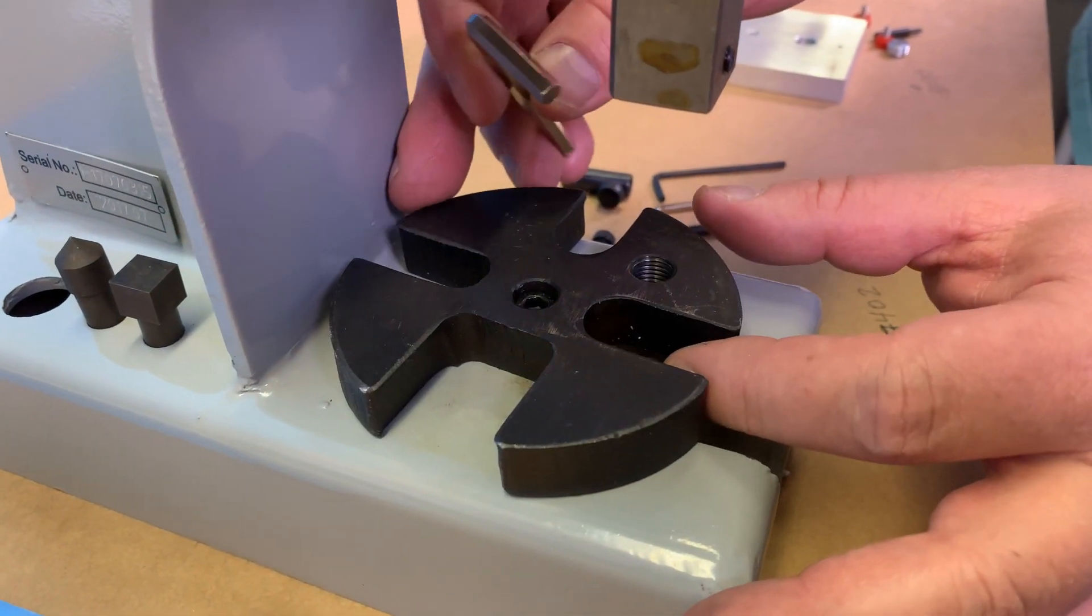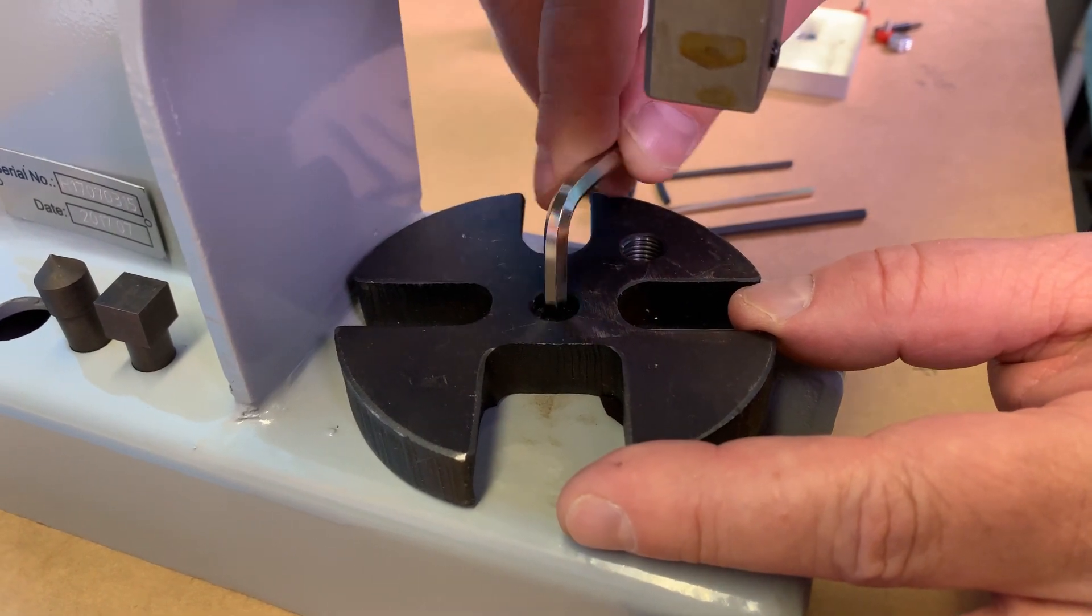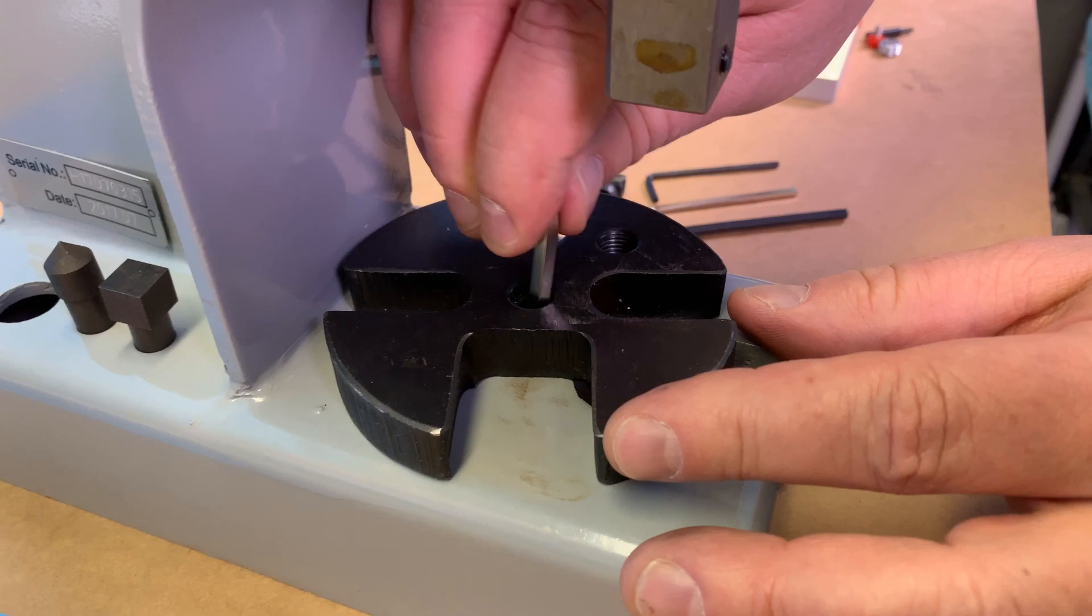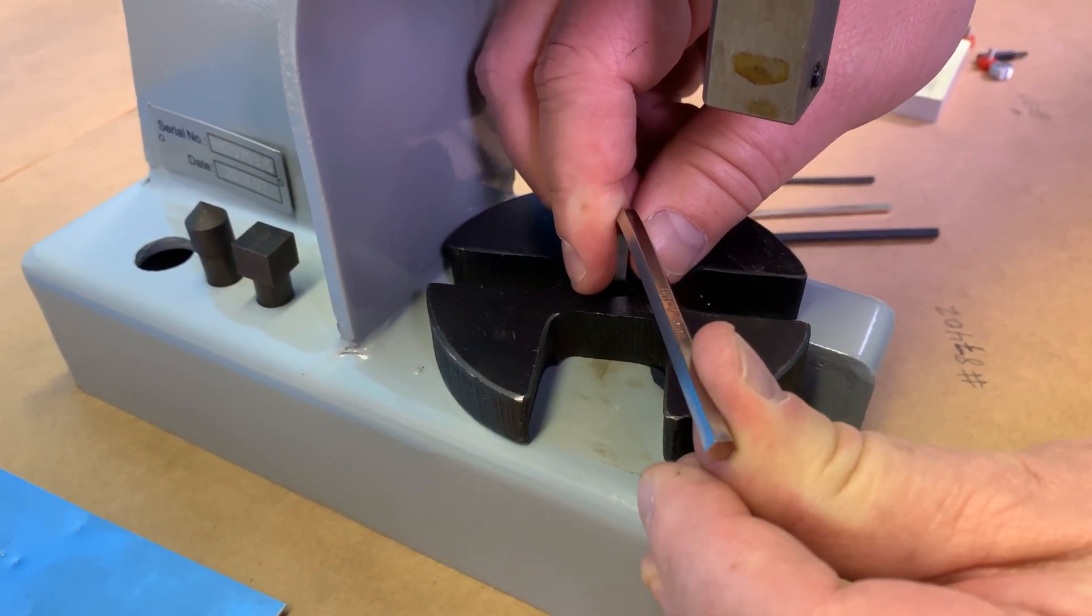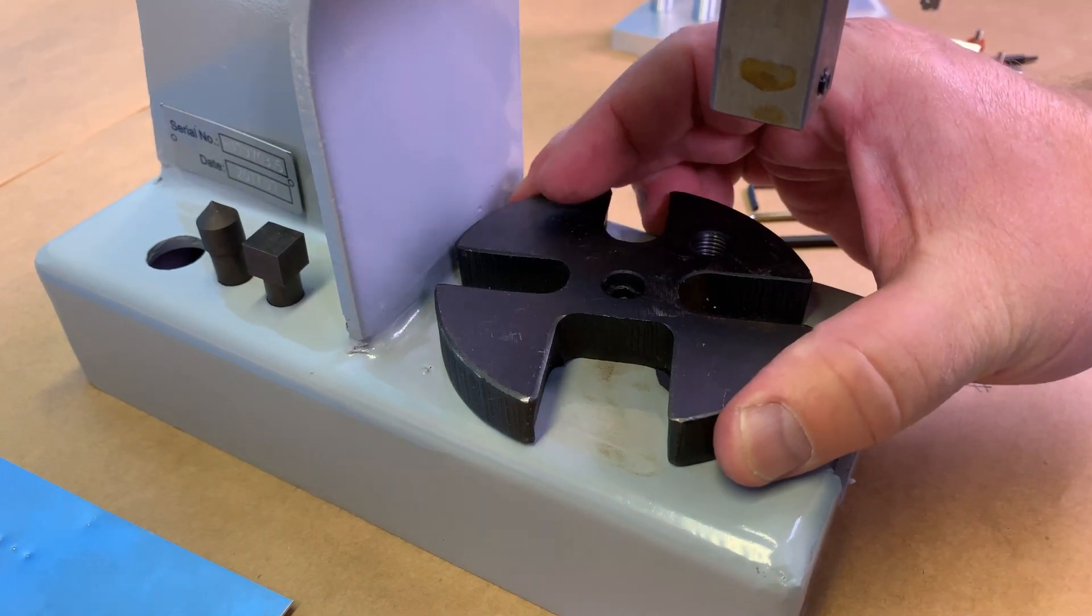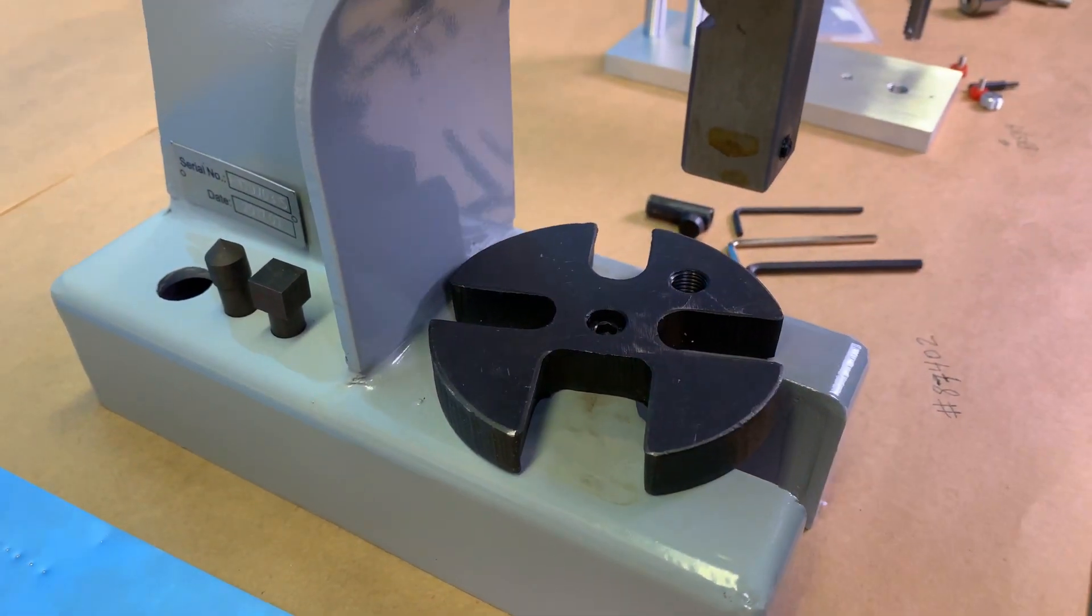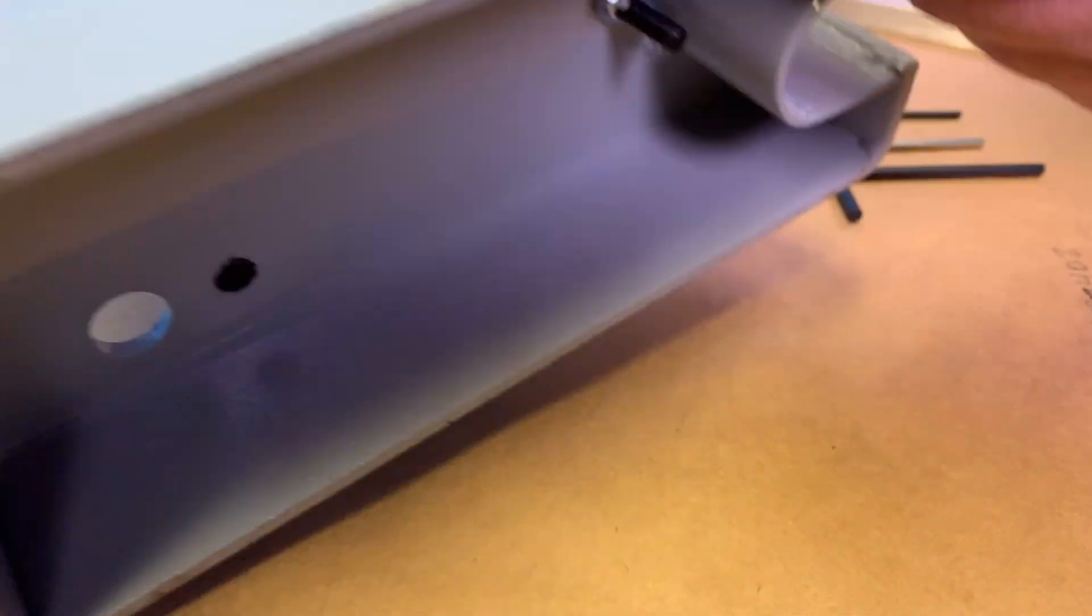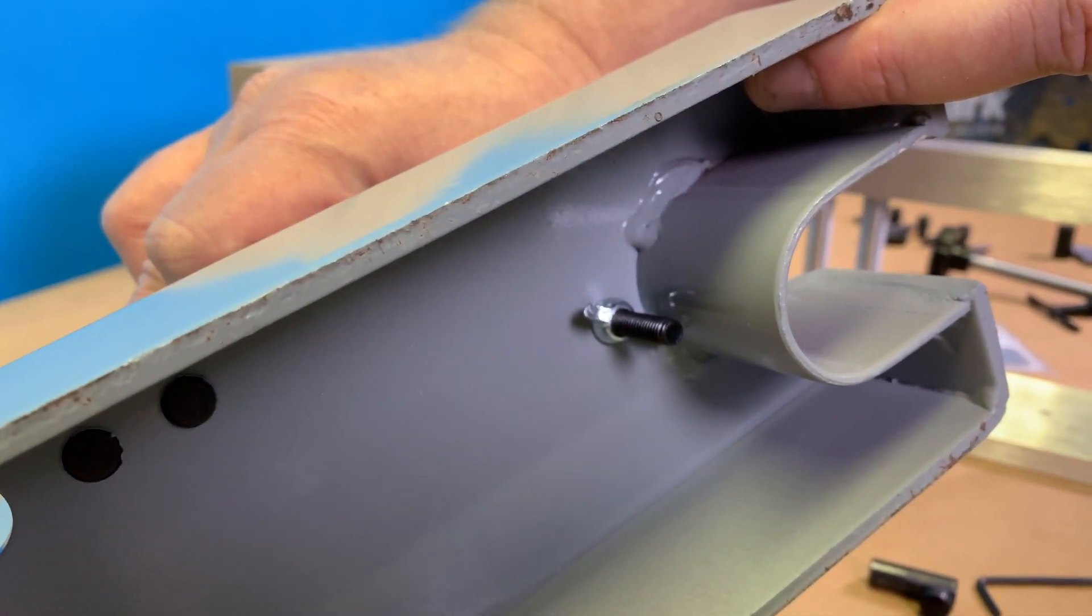This arbor plate can be locked into position straight out of the box into any position you might need. There's a cap screw in the center that you turn with the allen wrench. And now it's fully locked for precise repeated operations.